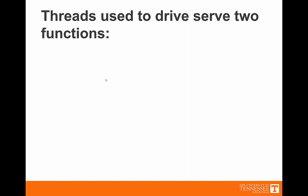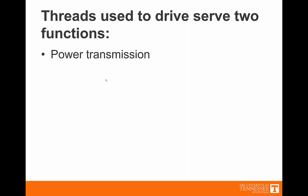When we use threads to drive, they're doing one of two things. One thing is power transmission. So we're either taking rotational energy to linear, or we're taking linear rotation to translational. So for instance, a car jack. As you twist the handle, you're applying a torque, so you're applying rotational work. And what you want it to do is you want it to achieve linear work. You want to raise the car off of the ground.